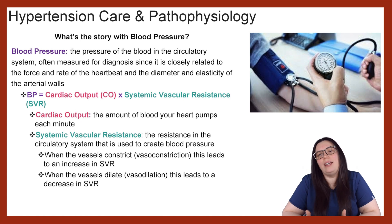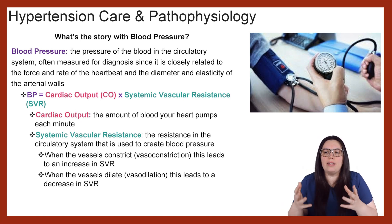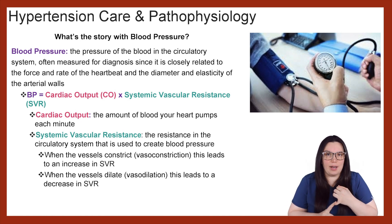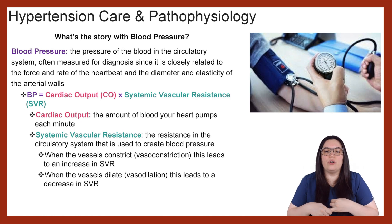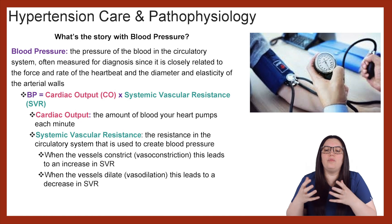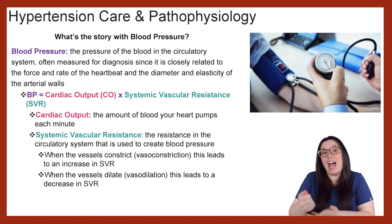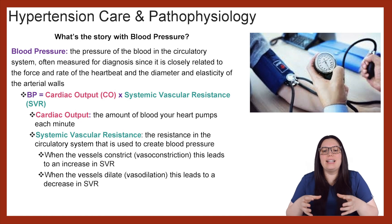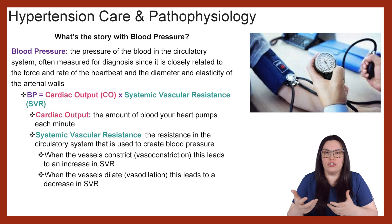So how do we know what blood pressure is? What makes up our blood pressure? Well, blood pressure is made up of our cardiac output and our systemic vascular resistance, also known as our SVR. Cardiac output is the amount of blood your heart pumps out each minute. Systemic vascular resistance is the resistance in the circulatory system that is used to create blood pressure.